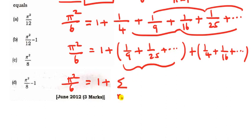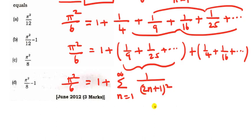Now, if we want to find summation n equal to 1 to infinity of 1 divided by (2n plus 1) whole square, we need the terms with odd denominators: for n equal to 1 that gives 1 by 9, for n equal to 2 that gives 1 by 25. So the target is 1 by 9 plus 1 by 25 plus etc.